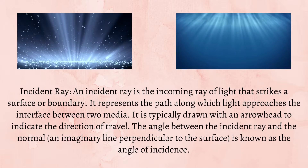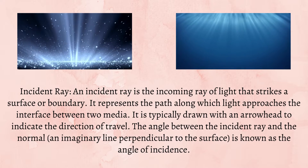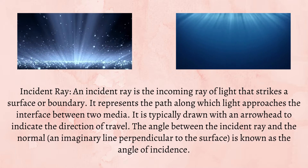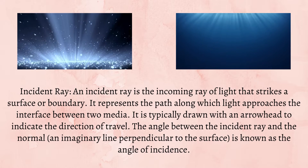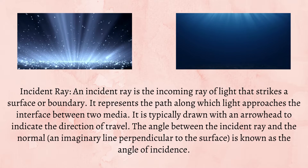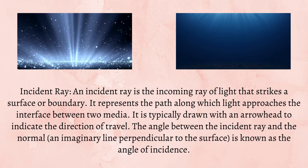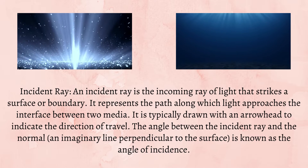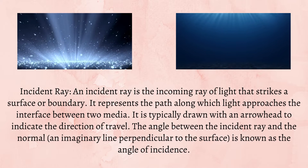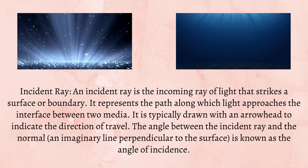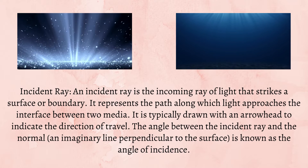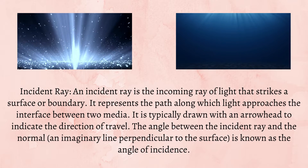An incident ray is the incoming ray of light that strikes a surface or boundary. It represents the path along which light approaches the interface between two media. It is typically drawn with an arrowhead to indicate the direction of travel. The angle between the incident ray and the normal — an imaginary line perpendicular to the surface — is known as the angle of incidence.